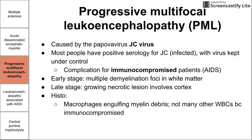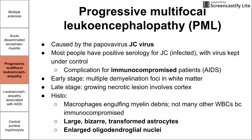On histology, PML has a few unique features. You see macrophages engulfing myelin debris with few other white blood cells present, reflecting the patient's immunocompromised state. You also see large, bizarre, transformed astrocytes — a unique hallmark of PML worth looking up. Additionally, you see enlarged oligodendroglial nuclei, likely representing viral inclusions of the JC virus deposited within those nuclei.